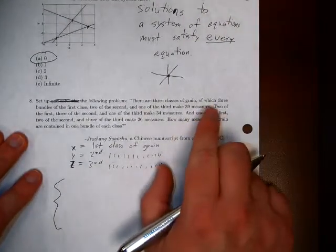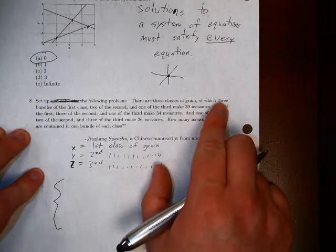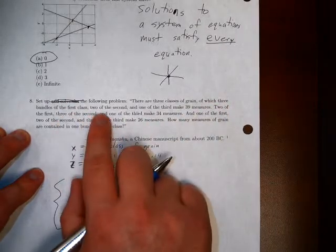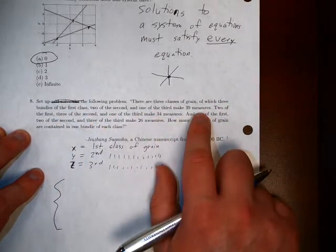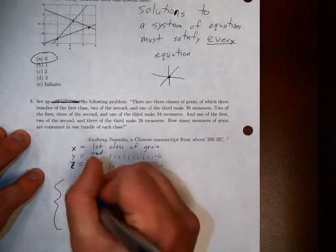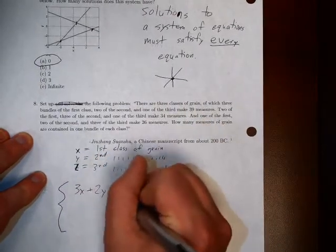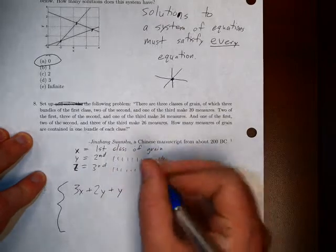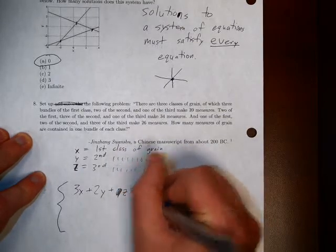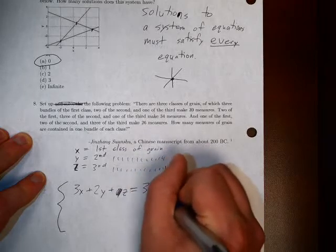If we want to go ahead and read the first sentence, it says, three bundles of the first class, two of the second, and one of the third make 39 measures. So three of the first, plus two of the second, plus one of the third, equals 39.